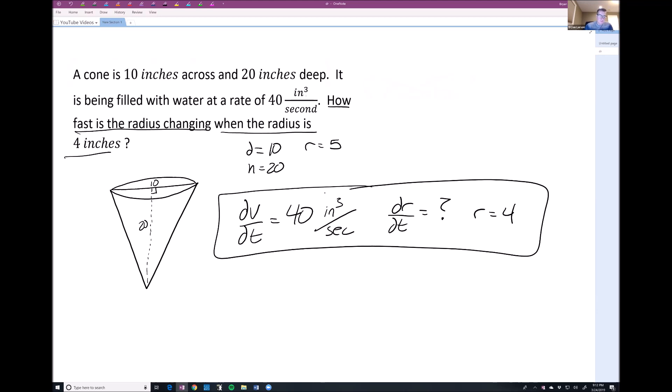Alright, well we know the volume formula of a cone is one-third pi r squared h. Now, with all our information that's highlighted in here, you see we have the radius, dr/dt, and dV/dt. We do not have h at all or dh/dt. So we want to eliminate the h from our problem here.